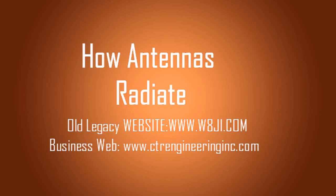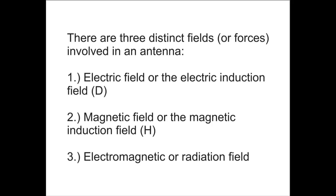There are three distinct fields or forces involved in an antenna. There's the electric or electric induction field, sometimes represented by D. There's the magnetic field or magnetic induction field, represented by H. And then there's the electromagnetic or radiation field that we use to communicate with each other, and that's the one that's important to us.